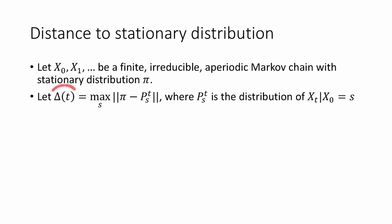We know that eventually Δ(t) will be small because the fundamental theorem of Markov chains says that this distribution is going to approach the stationary distribution as t gets large. Our question is how fast does Δ(t) get small?